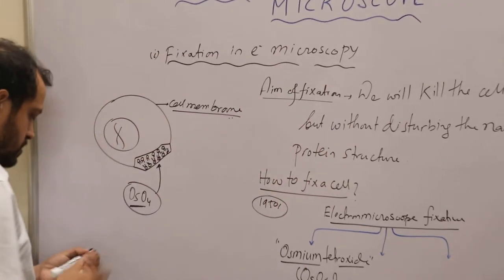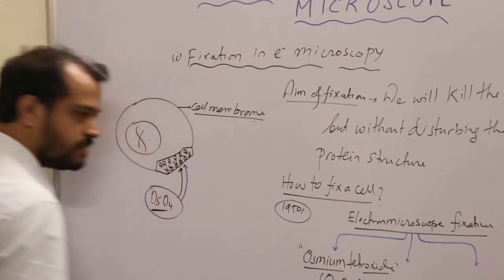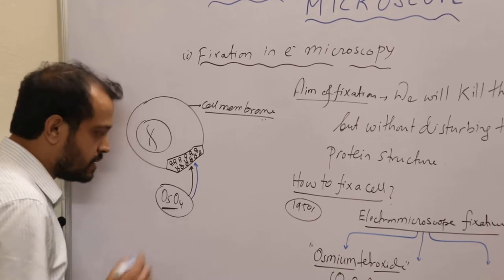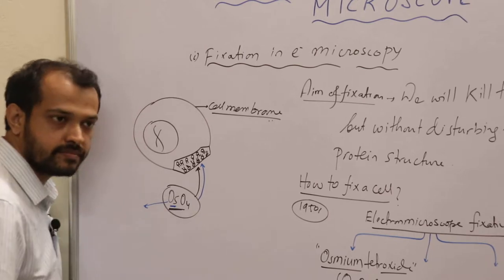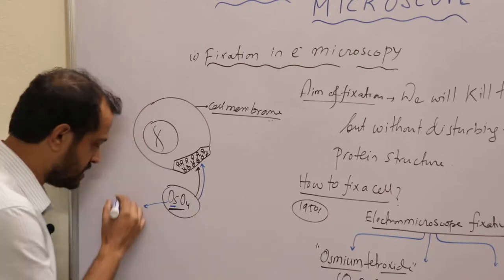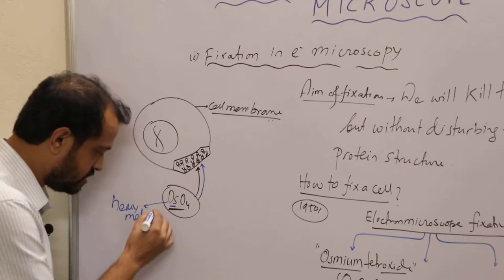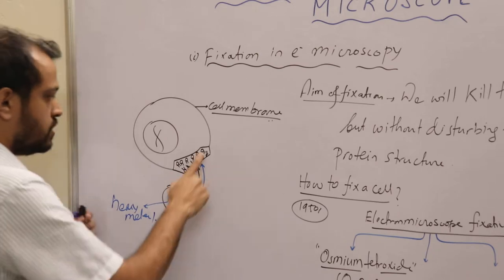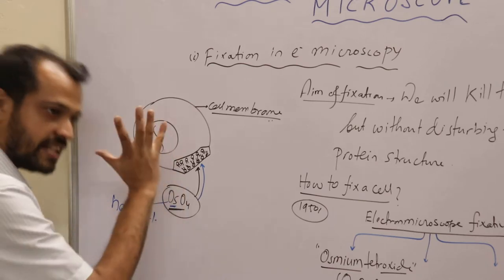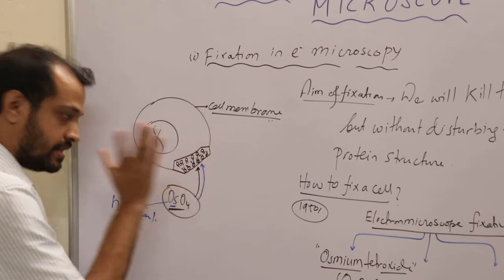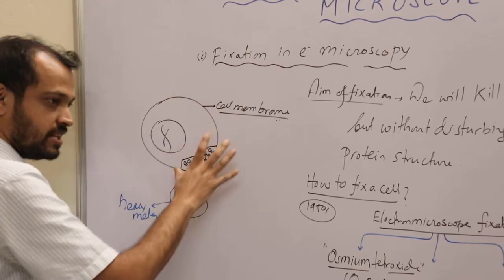Osmium tetroxide binds with the phospholipid bilayer. Osmium is a very heavy metal. Due to the binding of this heavy metal, the whole phospholipid structure is strengthened and it can no longer move. That means by the addition of osmium tetroxide, the whole fluidity and everything is lost.